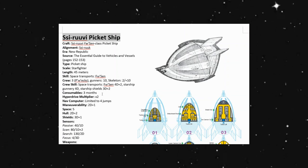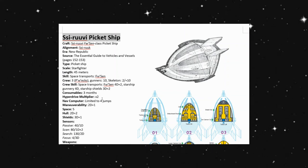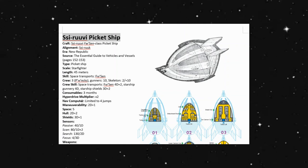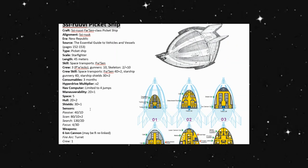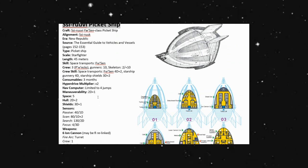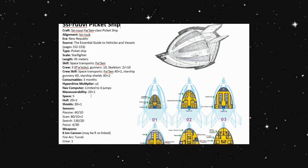It has three months worth of consumables. It has a times two hyperdrive, although there does not appear to be a backup hyperdrive. There is a nav computer but it's only limited to four jumps. It has maneuverability of 2D plus one and a space of five. So, not the fastest but not really the slowest ship out there. But again, as a picket ship, it's not a fighter. It's something to be out on the fringe to try and help defend against fighters.